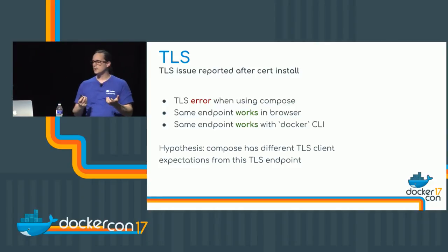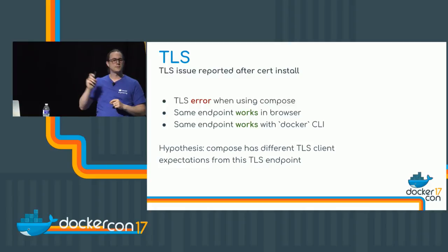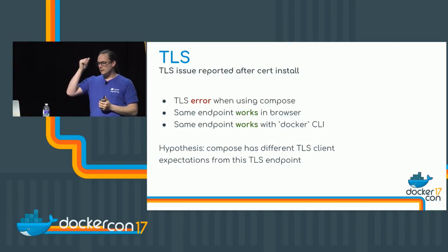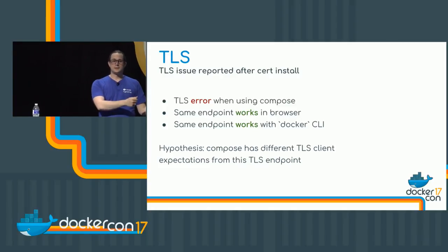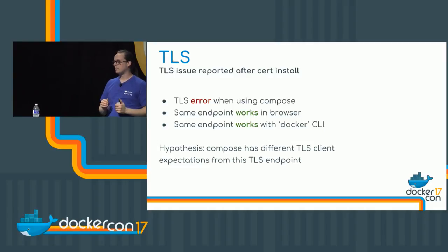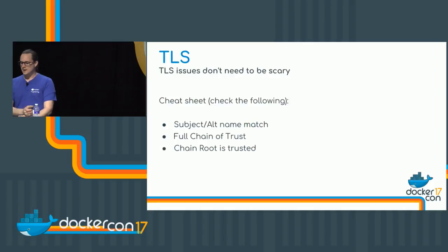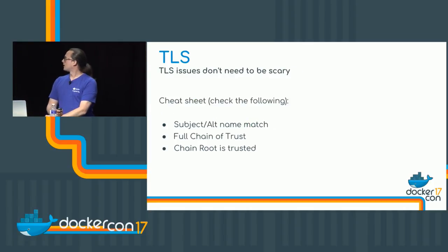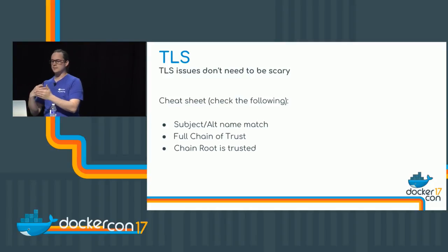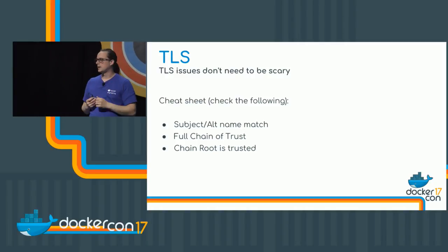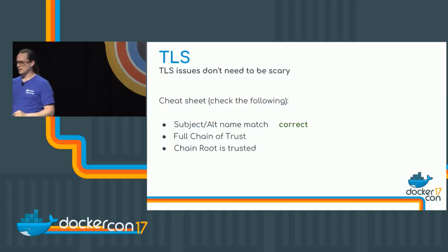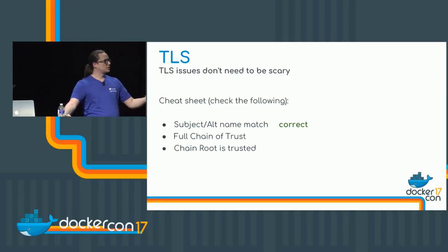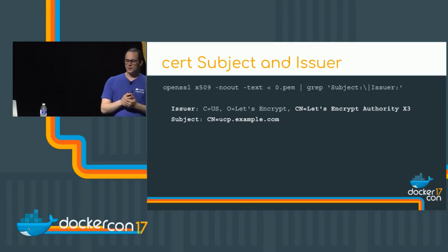It's working in the browser, working in Docker CLI, but not working in Compose. Steven has dealt with a few TLS issues before, so he thinks: Compose is written in Python and the Docker CLI is written in Go, and Chrome uses some other library. TLS libraries tend to have different opinions on how they establish trust, so maybe something about how he installed the certificate is not making the Python TLS client 100% happy. He has a handy checklist — anytime he has a certificate trust issue, he goes through it mentally. First: does the DNS match the subject or alt name? Yes — if not, Chrome or Docker CLI would not be happy. Next: the full chain of trust — we have to look at each cert individually.